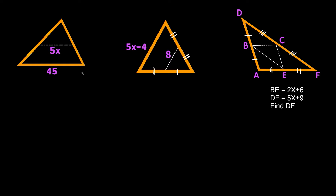Now let's go over these last few examples. For these two we're going to solve for X, and the last one is a little different. You can't necessarily assume any line you see is a mid-segment. The problem either has to tell you that it's a mid-segment, or you're going to see the congruent hash marks — showing that one side is congruent to the other, confirming the midpoints. That's just a little advice because some teachers like to trick you.